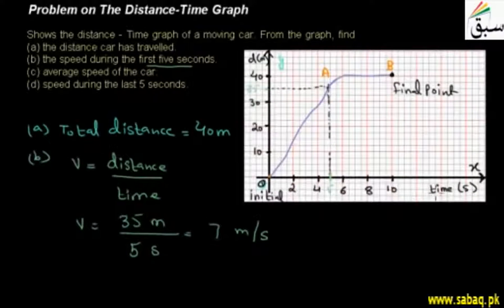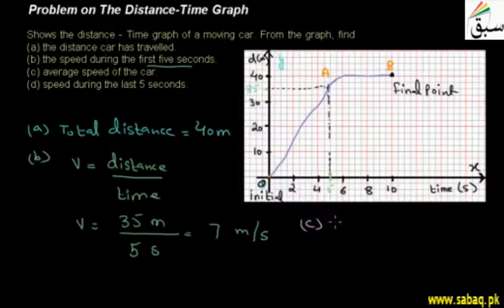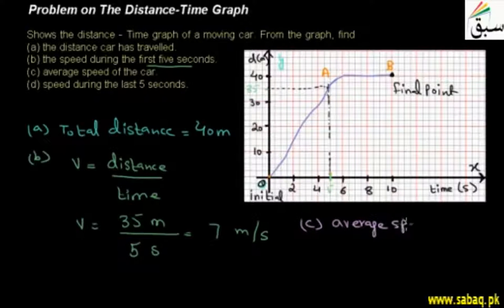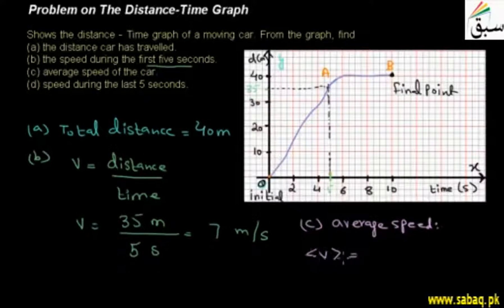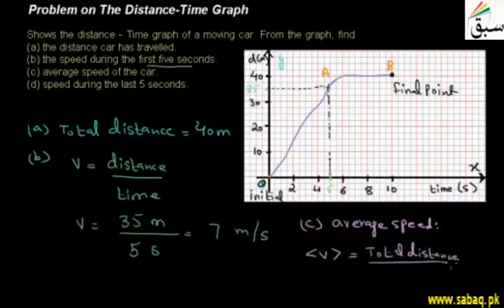Now the third part — part C: we solve for average speed. Average speed is defined as total distance traveled by the car divided by the total time taken.